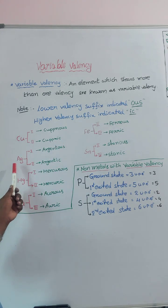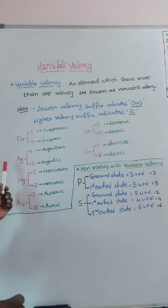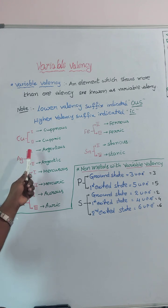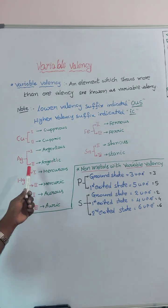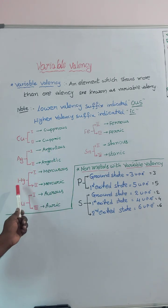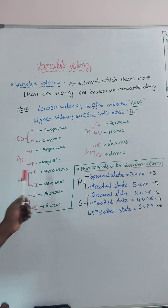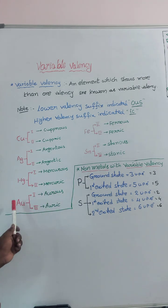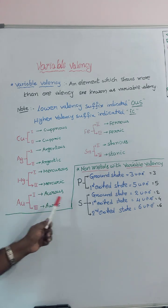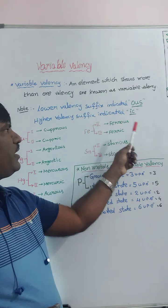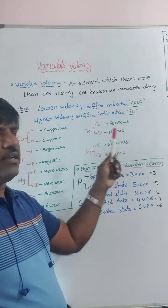Silver — Latin name is Argentum — so lower valency is argentous, higher valency is argentic. Mercury: lower valency is mercurous, higher valency is mercuric. Gold: lower valency is aurous, higher valency is auric. Iron: lower valency is ferrous, higher valency is ferric.